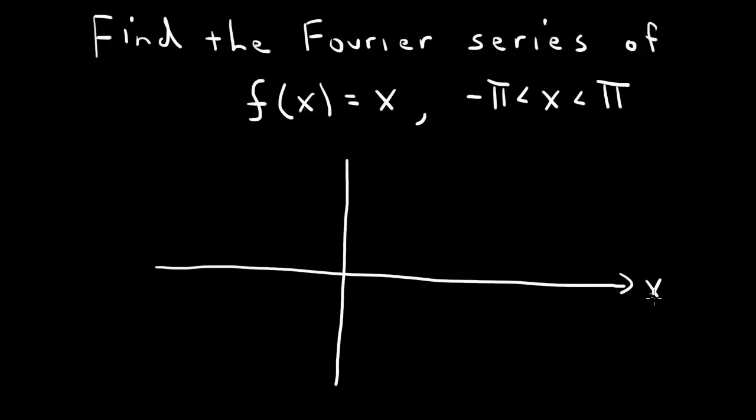So this is a linear function, f of x equals x, so it's the line here. And then this is between minus pi and pi.